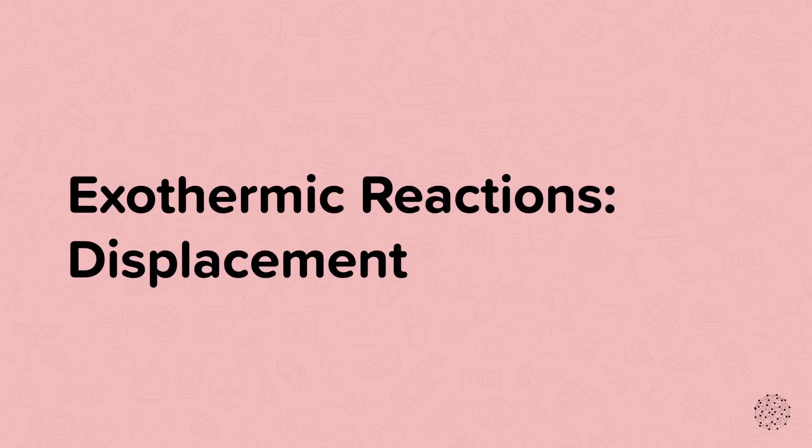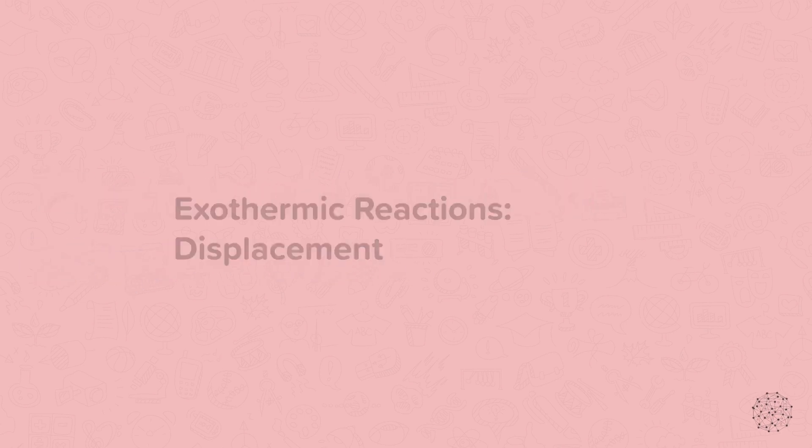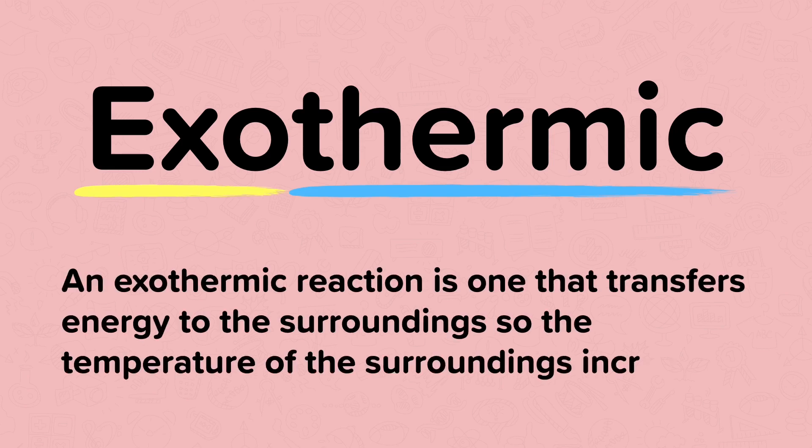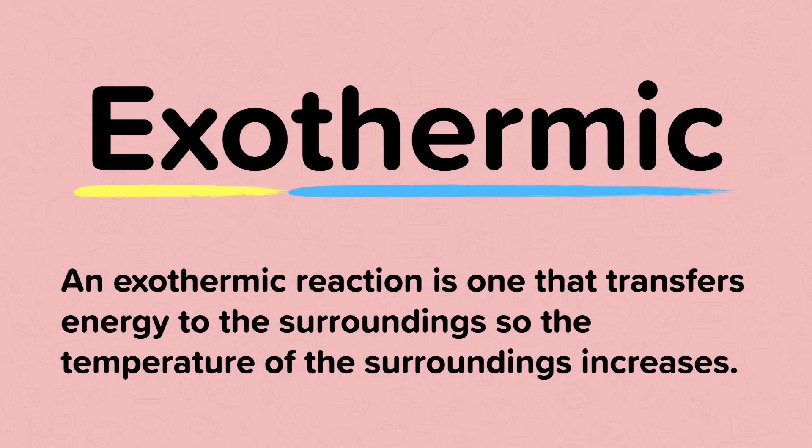In this nugget on exothermic reactions, we are going to look at displacement. Let's break down the word into its parts. Exo means outside, and thermic means of heat. So in chemistry, an exothermic reaction is one that transfers energy to the surroundings, so the temperature of the surroundings increases.